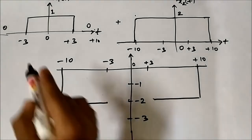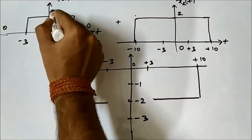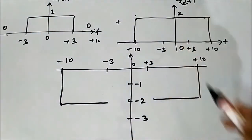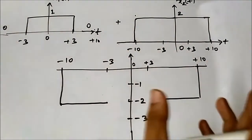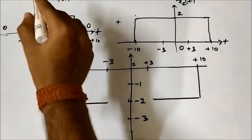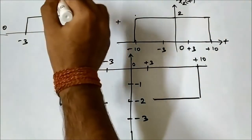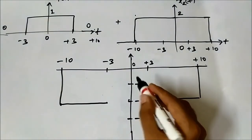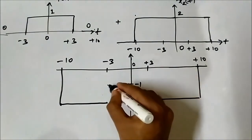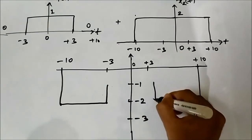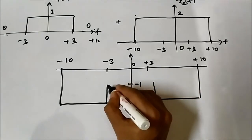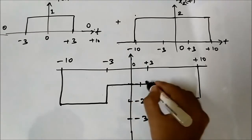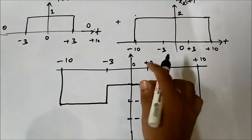Then from minus 3 to plus 3, the amplitude of x2(t) is 2. So when we perform the subtraction x1(t) minus x2(t), it is 1 minus 2, which is minus 1. So in between minus 3 to plus 3, the result is minus 1.